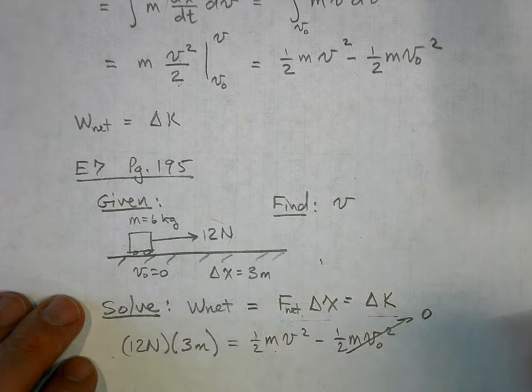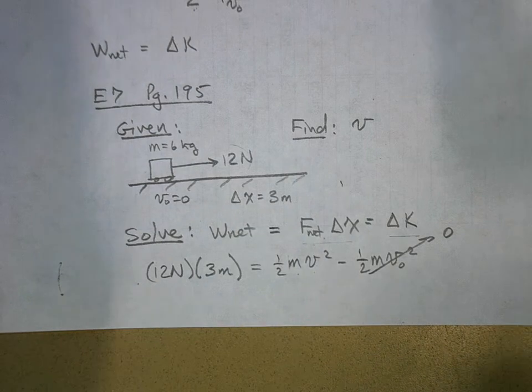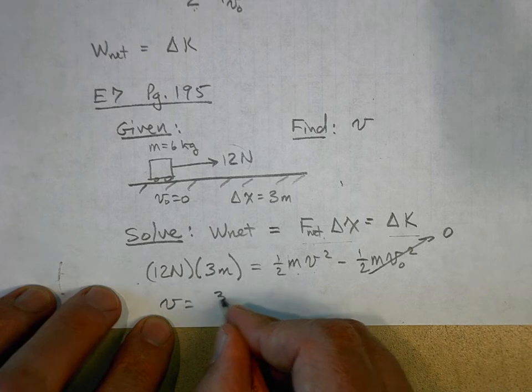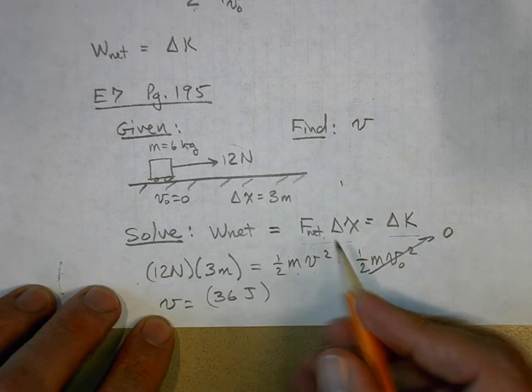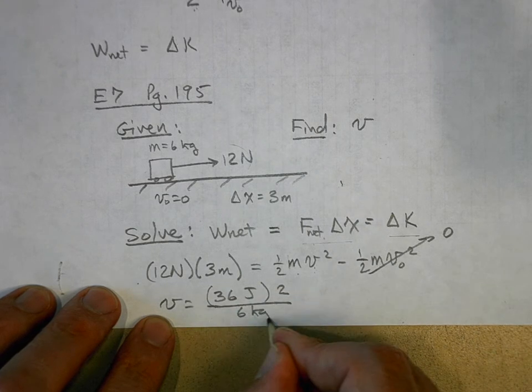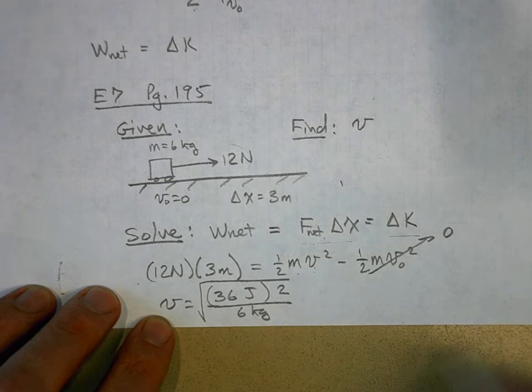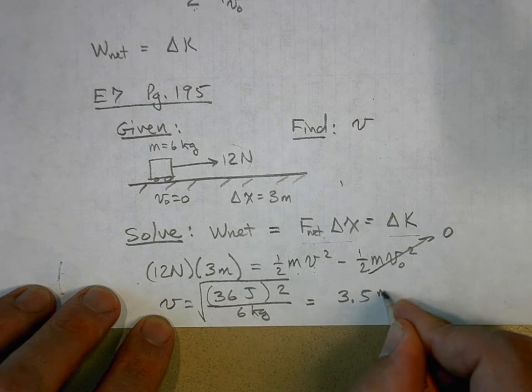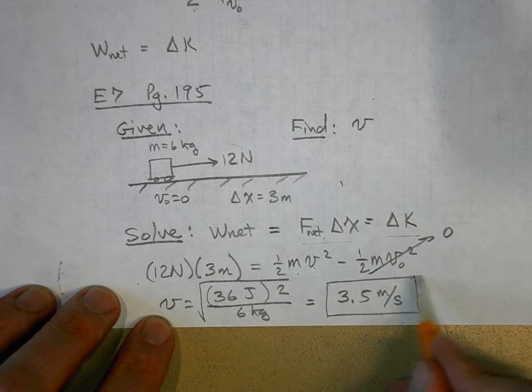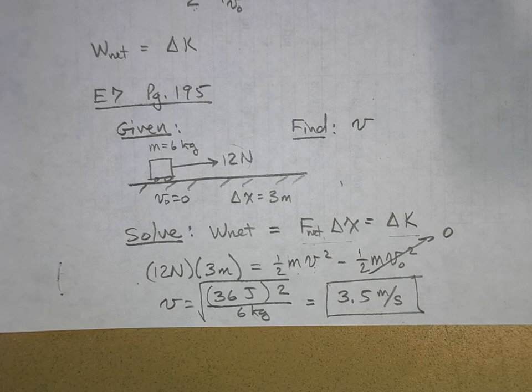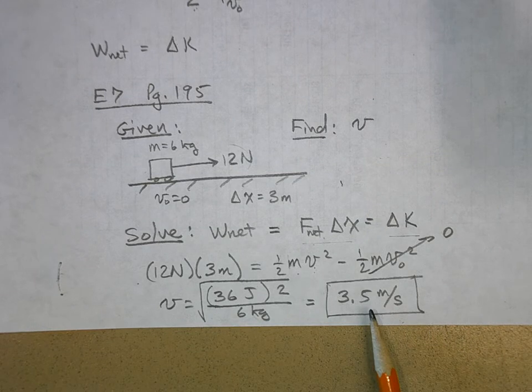So let me move this up a little bit. So I've got v is equal to the work done which was 36 joules. But now to solve for v I multiply that by 2, I divide by the mass which is 6 kilograms, and then I take the square root of it. And so when I do that I get a final velocity of 3.5 meters per second. It's a different way of solving some of the problems that we did before.